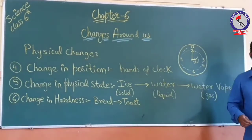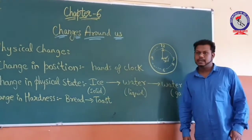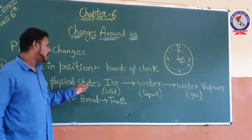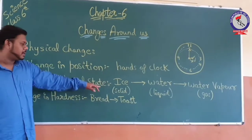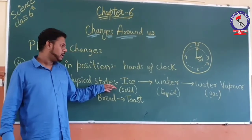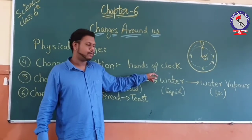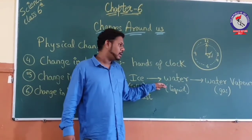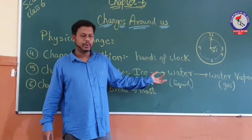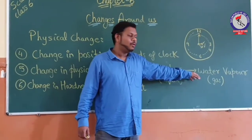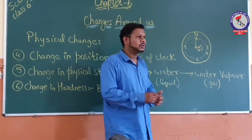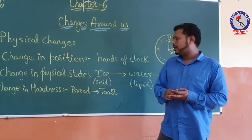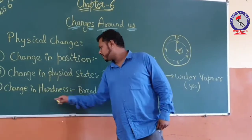Now we will talk about change in physical state. There are three states: solid, liquid, and gas. Taking the example of ice — ice is solid. If we leave it, it will get converted into water, which is liquid. That liquid water will then evaporate and convert into water vapor, which is gas. So some objects around us also change their state.